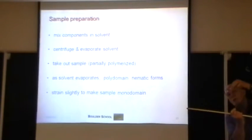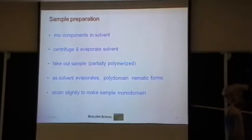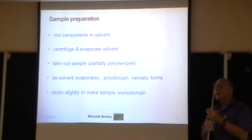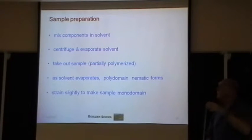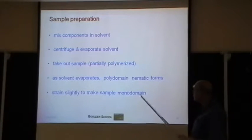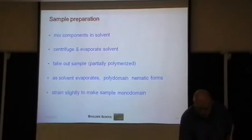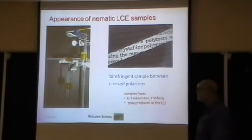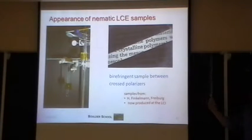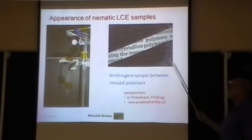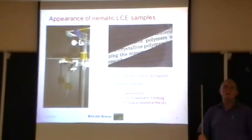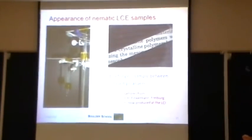When the solvent evaporates, the mesogens start to bump into each other and liquid crystal domains form. Orientational order starts in different places in the sample and they don't communicate, so if you do nothing you end up with a polydomain sample. Typically, one hangs a very small weight on these strips as the solvent evaporates — that's enough to align the little domains and you get a single large monodomain sample. They look like transparent anisotropic jelly — birefringent, so between crossed polarizers they look just like a birefringent crystal.